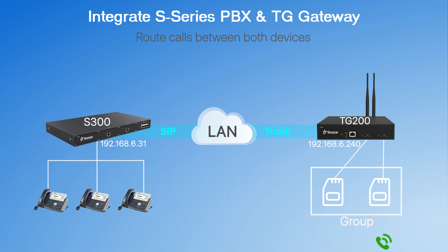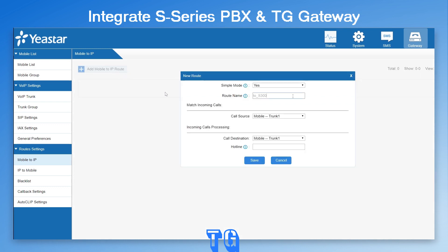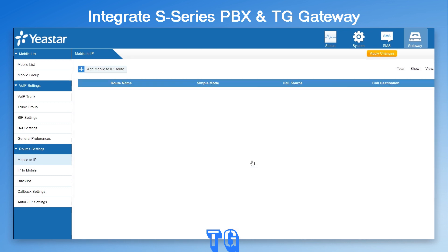Next, we need to figure out routing for incoming calls from the SIM cards to reach internal users of the PBX. First, on the gateway, add a mobile-to-IP route. Choose the SIM card as the call source and set the destination to the PBX. Since SIM cards have no DID numbers, we can customize a number here which will be bound with the trunk. Remember to enter that SIM number in the DID pattern of an inbound route on the PBX to make it work.